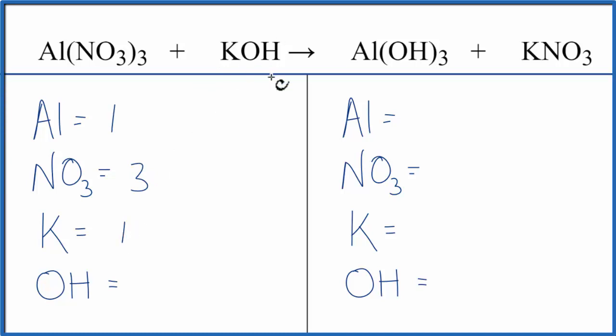Potassium's one. OH is the hydroxide, another polyatomic ion. It stays together. We have OH here, and we have OH here. So I'll say I just have one OH here on the reactants.